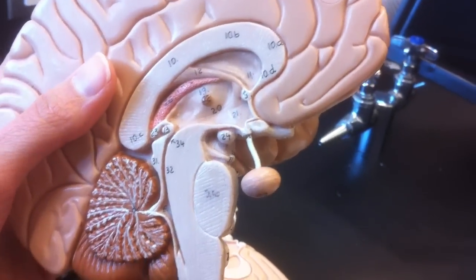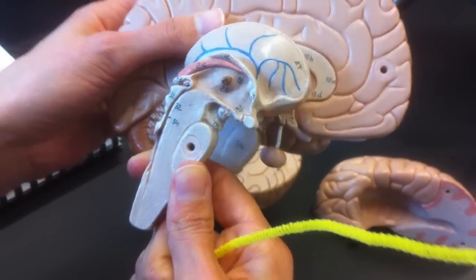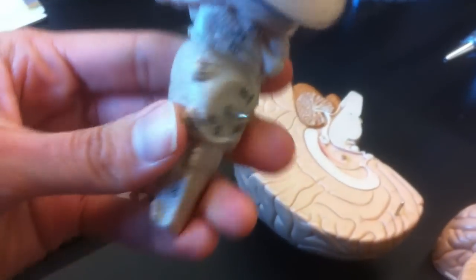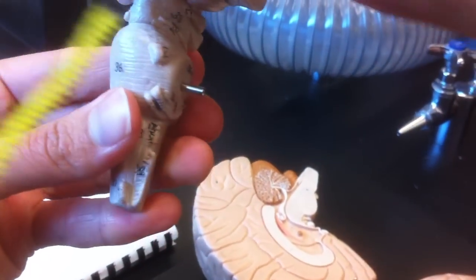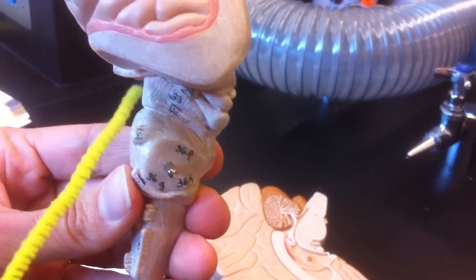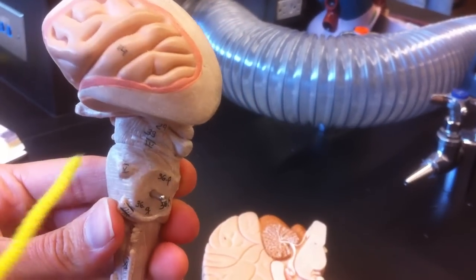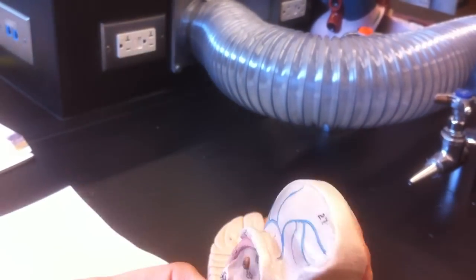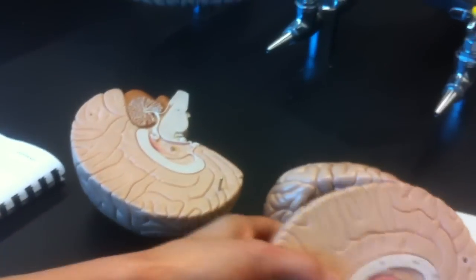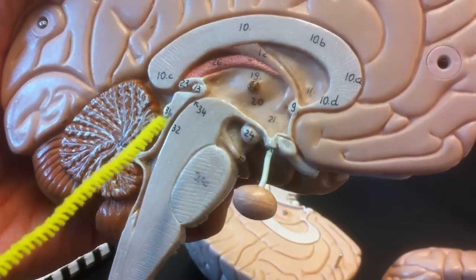Moving on to the midbrain, the mesencephalon. The cerebral peduncles. Thirty-three. Cerebral peduncle, so it's like this. Thirty-three. The aqueduct of the midbrain. The cerebral aqueduct is number thirty-four.